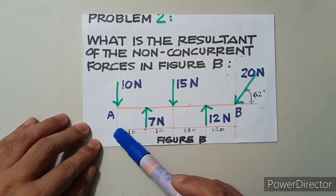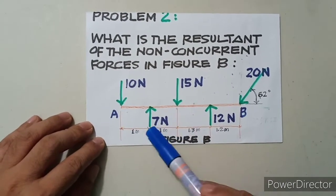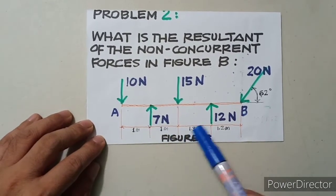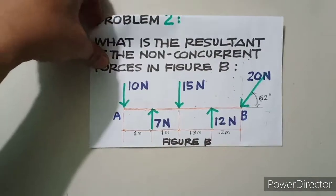The distance is 1.1 meters. From here to this point is 1 meter, that's 1.3 meters, that's 1.2 meters.